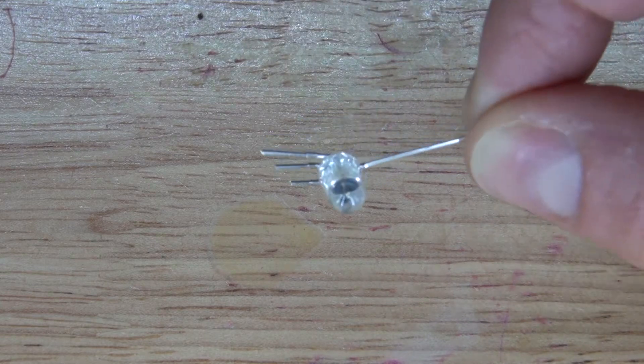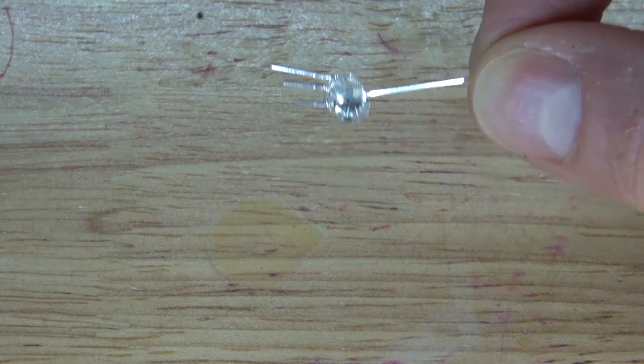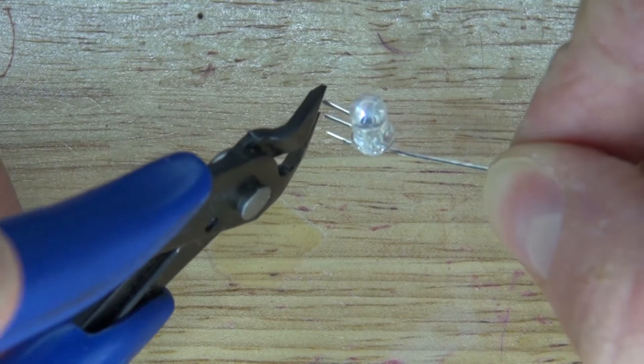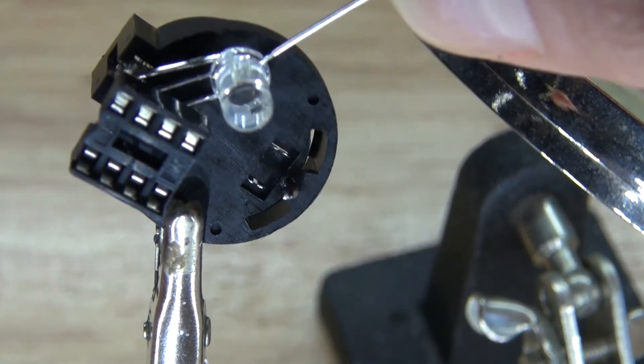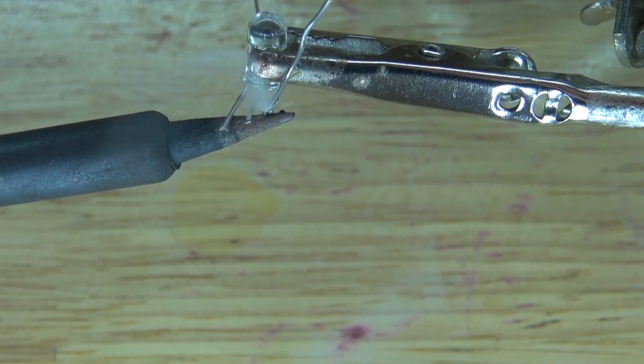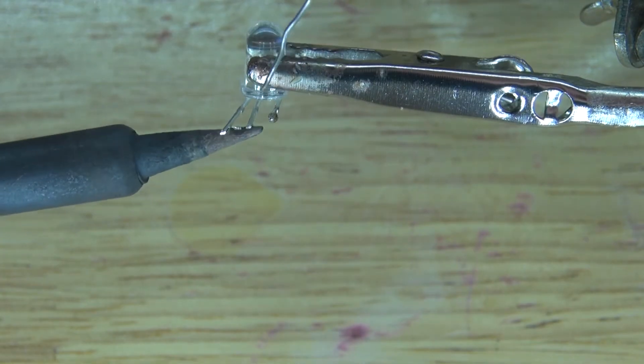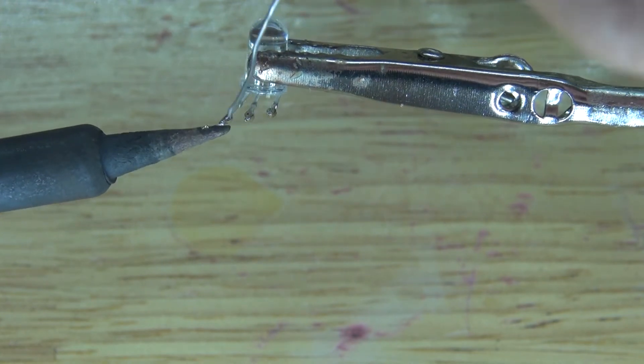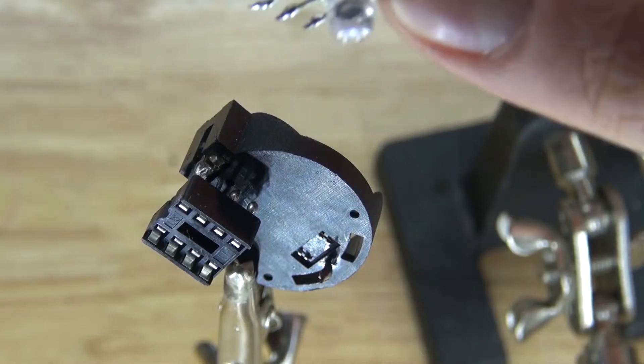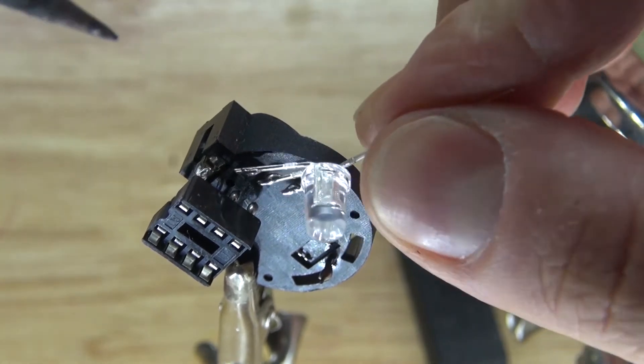Next cut the 3 anode leads in this direction. The reason for doing that is that way it can connect to the IC socket holder better. So then that way the 3 anodes can connect to pin 5, 6, and 7. So then solder tin the leads. And then solder them into place onto pin 5, 6, and 7.